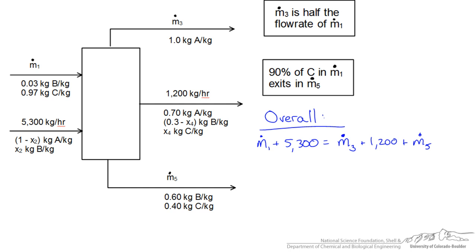So now we can do a balance on A, B, or C. B at least shows up in most of the streams. Let's start with a B balance. And it's important here that we use the mass fractions along with the overall stream mass to account for the total amount of B in each stream. So for instance, in this first stream M1, let's say we have 1 kg of M1. 3% of that is B. So we write that as 0.03 M1 as the total amount of B that is entering in that stream.